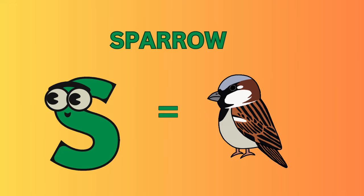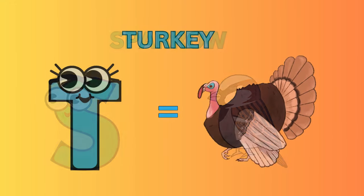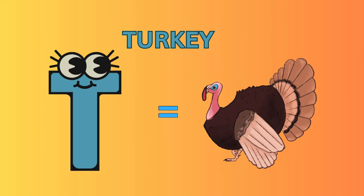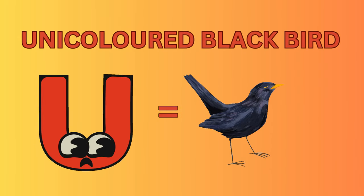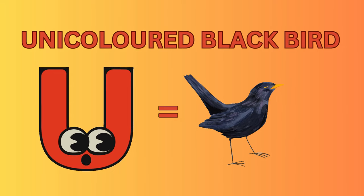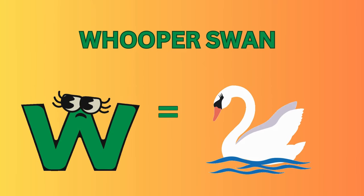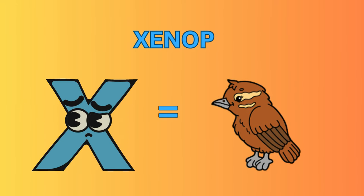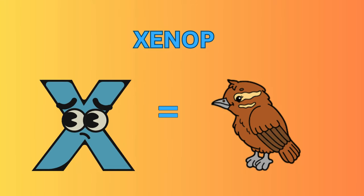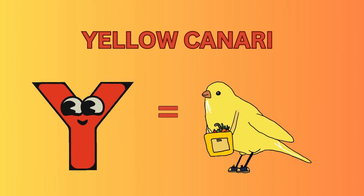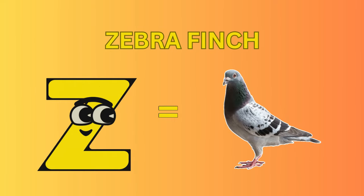S for Sparrow. T for Turkey. U for Uni Colored Black Bird. V for Vulture. W for Whippoorwill.